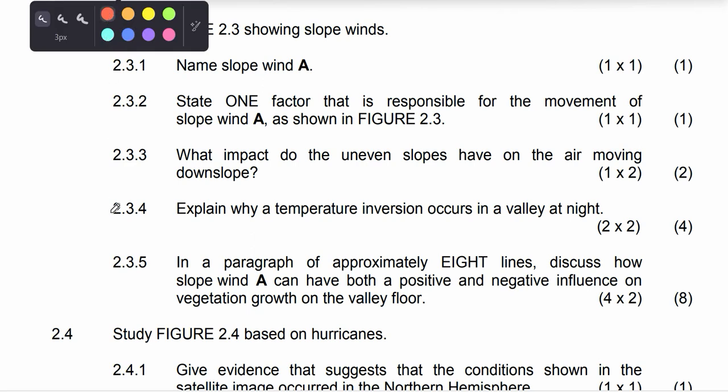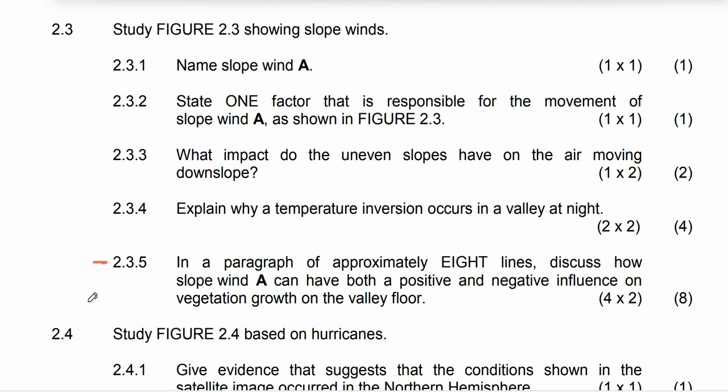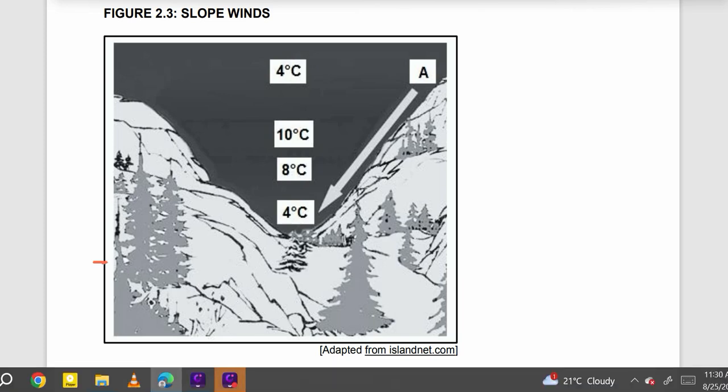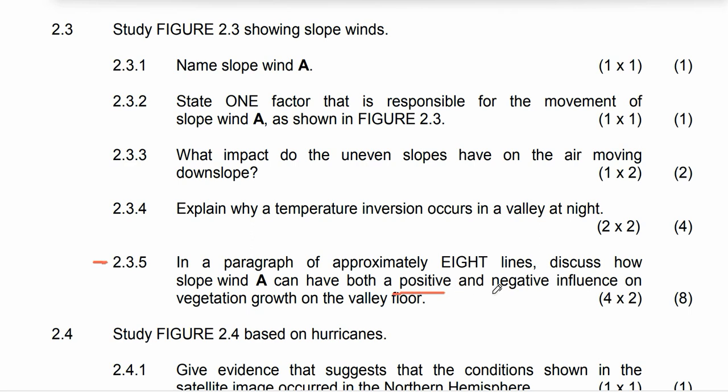Let's move to 2.3.5, which says: in a paragraph of approximately eight lines, discuss how slope wind A — katabatic winds — can have both positive and negative influences on vegetation growth on the valley floor. We need to state some positive and negative effects. Let's aim for at least two points each for positive and negative.